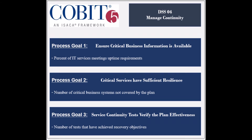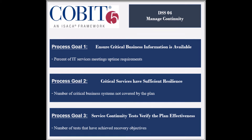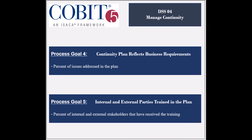The process has five process goals. The first goal is to ensure that the business critical information is available, and its achievement is measured by the percent of IT services meeting uptime requirements. The second goal is to ensure that the critical services are resilient, and its achievement is measured by the number of critical systems not covered by the plan. The third goal is to ensure that service continuity tests verify the effectiveness of the plan, and its achievement is measured by the frequency of tests. The fourth goal is to ensure that the continuity plan is up to date and reflects the business requirements, and its achievement is measured by the percent of issues that have been addressed in the plan.